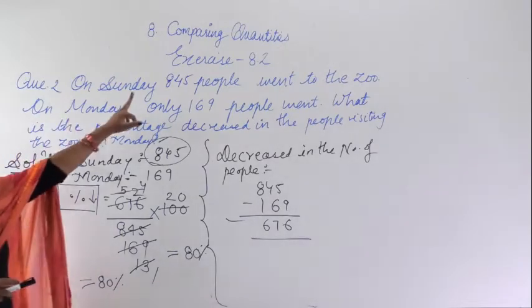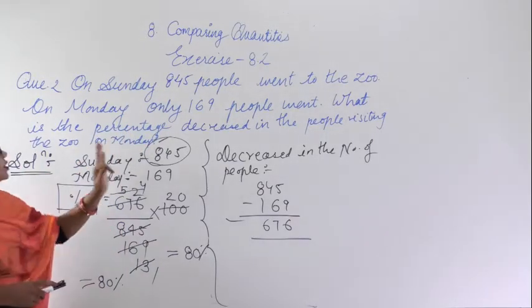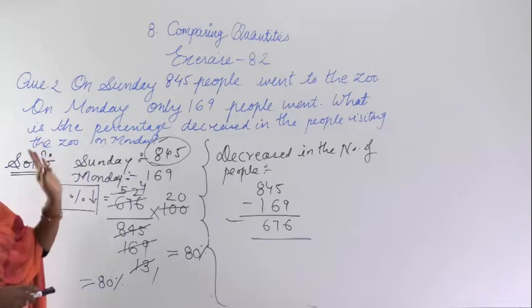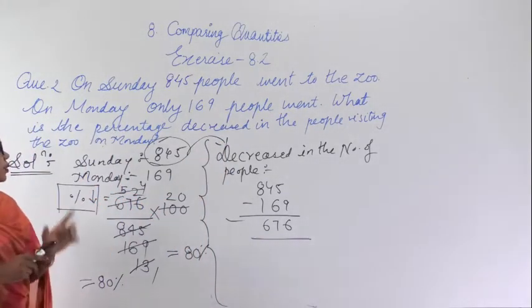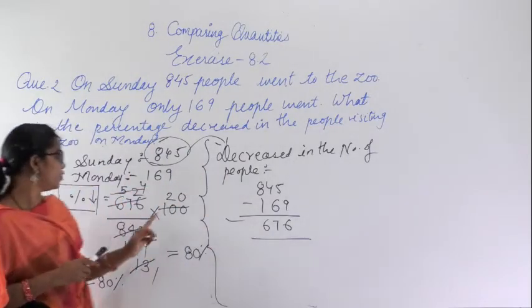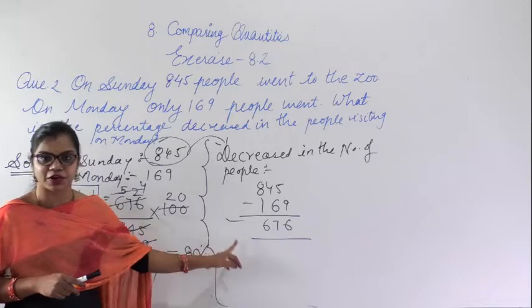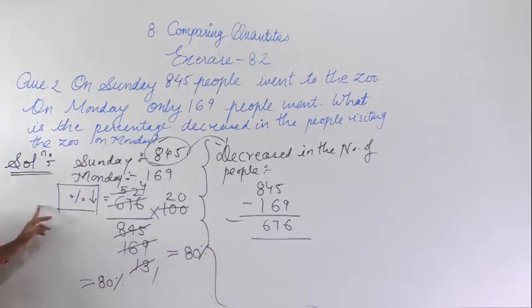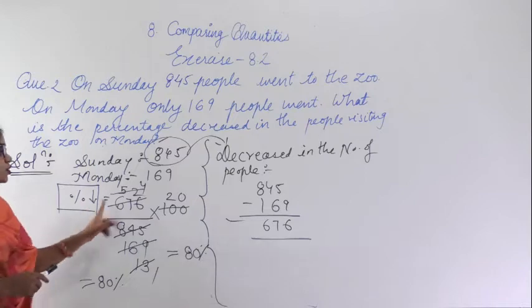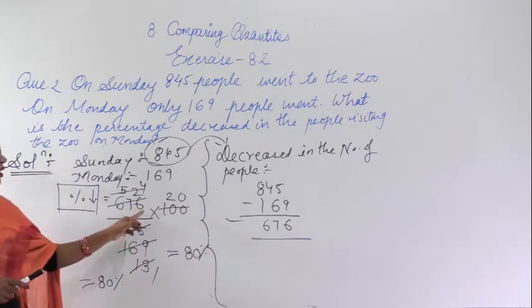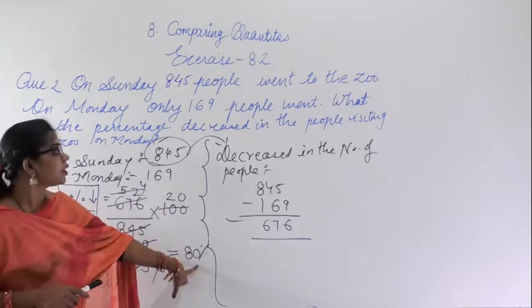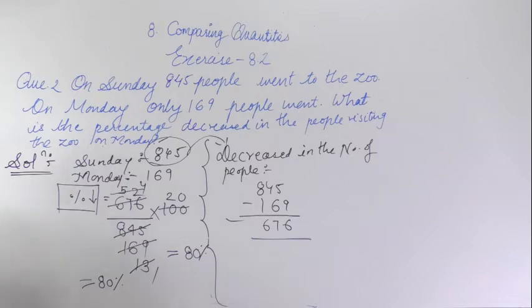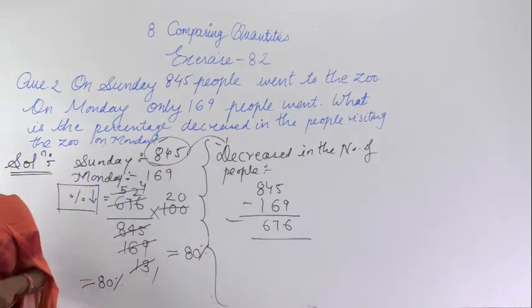In this question, 845 people went on Sunday and 169 went on Monday. First we found the decrease in number of people: 845 minus 169 equals 676. Then percentage decrease equals 676 upon 845 into 100, and after solving we got 80% decrease in people visiting the zoo on Monday.